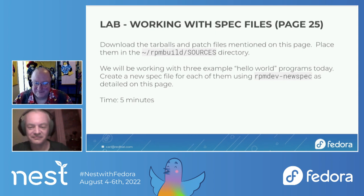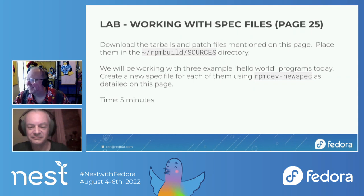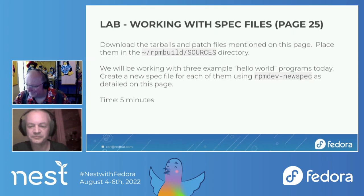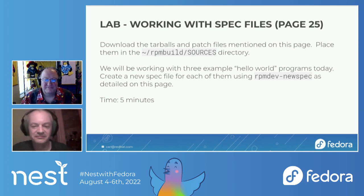I did some quick math for the rest of the slides and labs, and I've talked a little bit too long on the introduction stuff. Two hours is really cutting it close to get through all the material with breaks. So we're going to skip one of the three Hello World examples — the pello Python one — just due to time. We'll do the bash and C examples: bello and cello. If you want to do pello later on your own, you'll have all the material in the packaging guide.